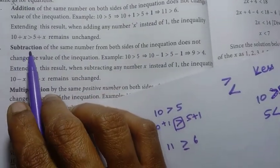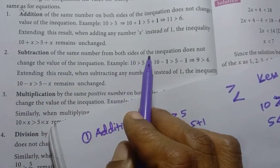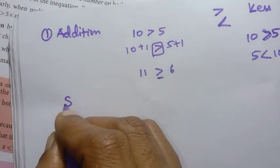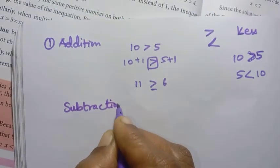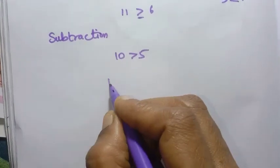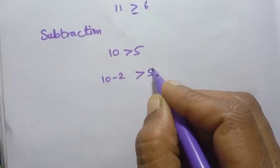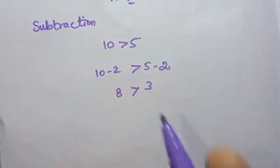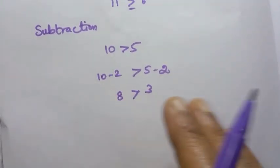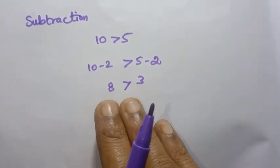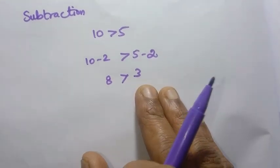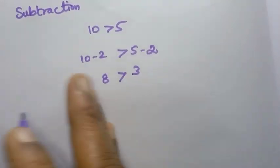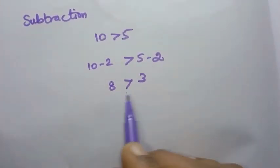And then subtraction: subtraction of the same number from both sides of the inequation does not change the value of the inequation. Same rule — subtraction. Example: 10 greater than 5; 10 minus 2 is greater than 5 minus 2; 10 minus 2 is 8, 5 minus 2 is 3. So both left and right hand side values are reduced by 2, but the greater/lesser relationship stays the same.